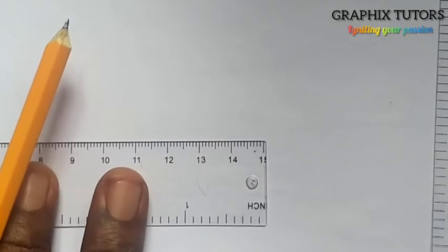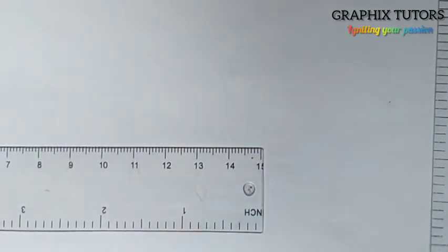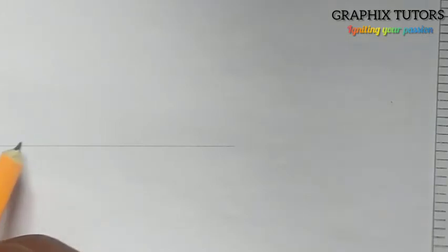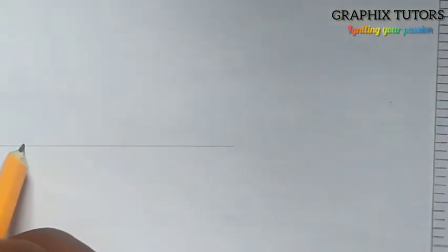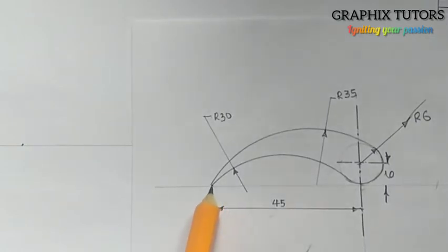I'll take my set square and T-square, place it this way, and draw a straight line. Now on the straight line I draw, I'm going to pick a point. Let's say this point here — this point I selected is this point on my diagram. From here to here is 45, so I'm going to measure 45.